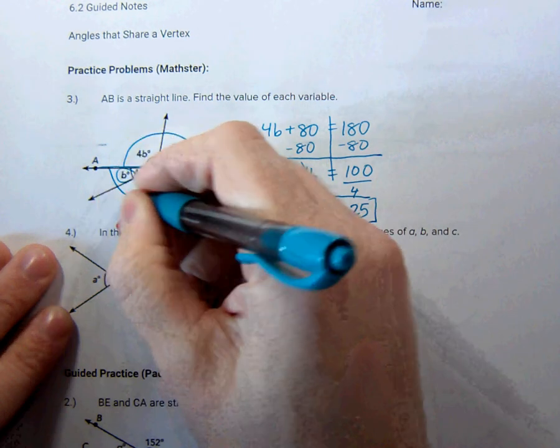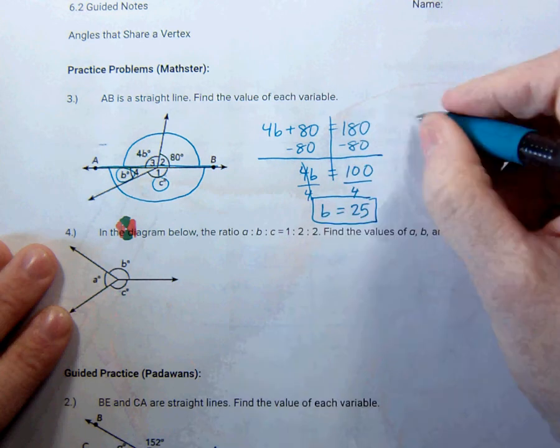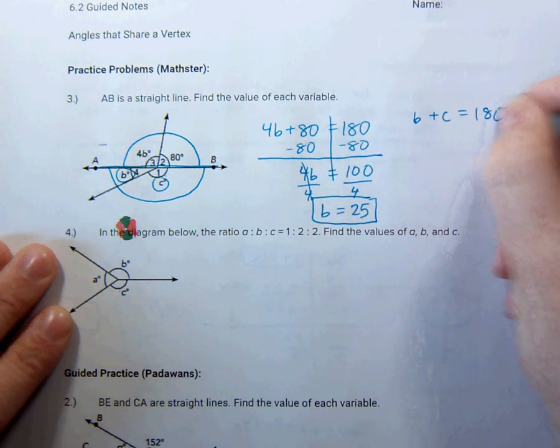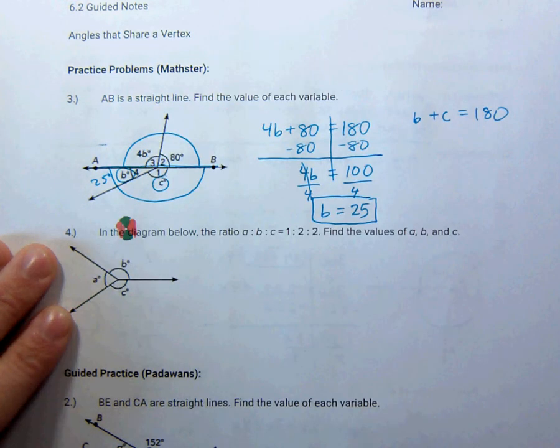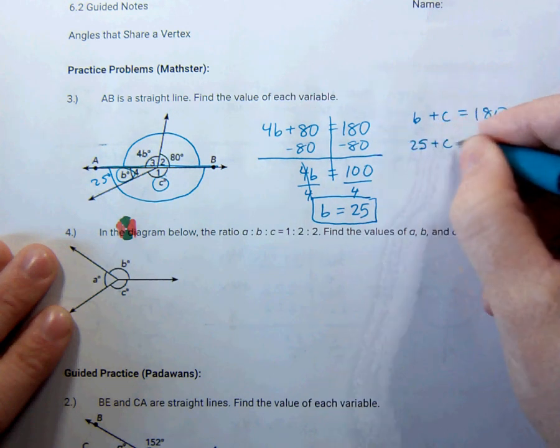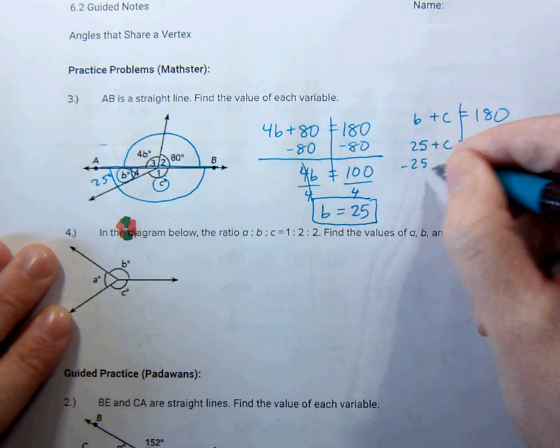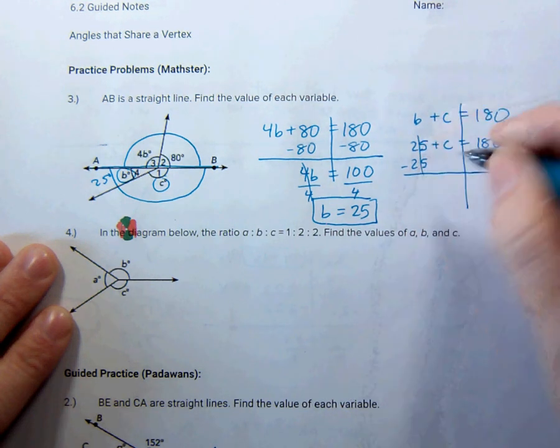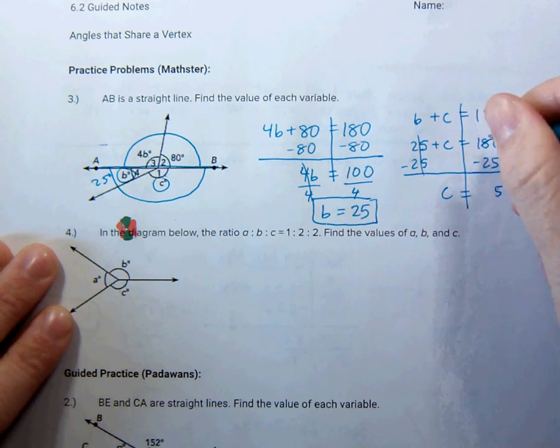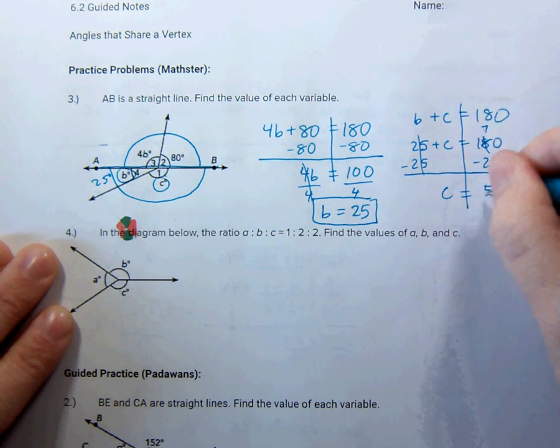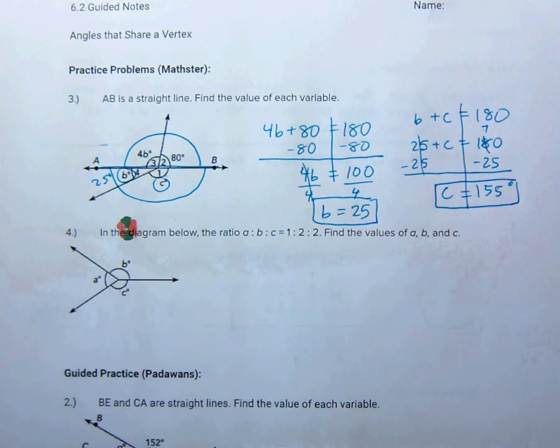Now, again, this equals 180 degrees. Those are supplementary. So b plus c equals 180 degrees. Now we just found that b is 25. So that means that 25 plus c is equal to 180 degrees. Subtract 25. Subtract 25. c is equal to, this is 5, 155 degrees. Yay!